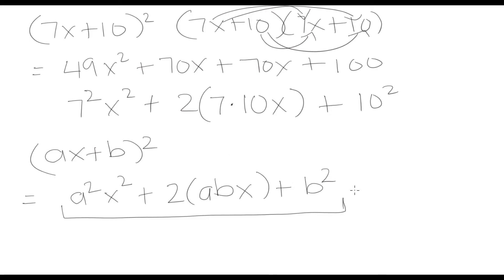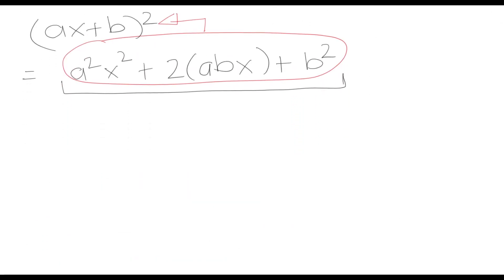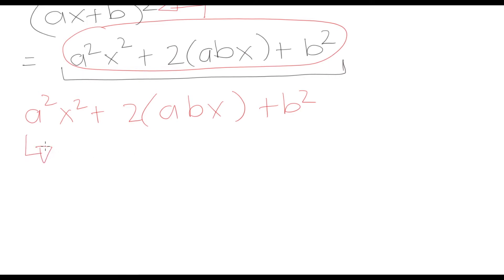Since expanding is the opposite of factoring, whenever we get an expression that is in this form — a squared x squared plus 2abx plus b squared — we have a very simple formula for what its factored form is going to be. We know that we can easily factor that as ax plus b squared.